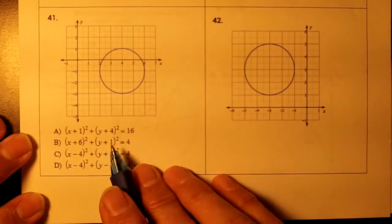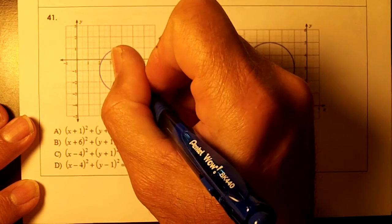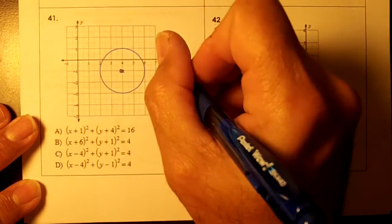41 and 42, we're going to go from a graph to the formula. So get the center first. The center is going to be right here. Write down the ordered pair, it's 4, negative 1.